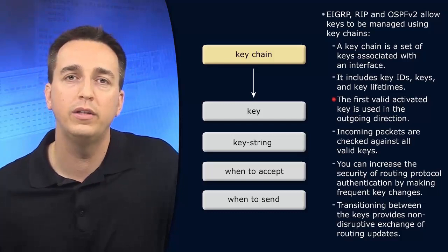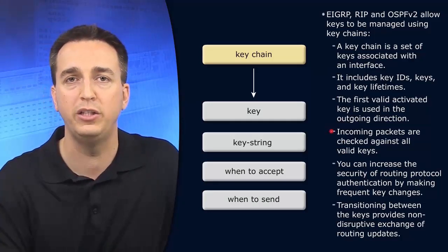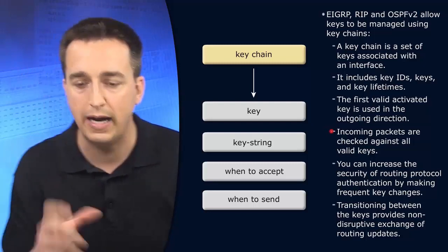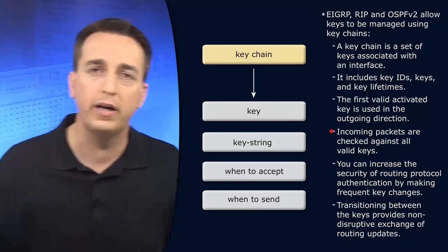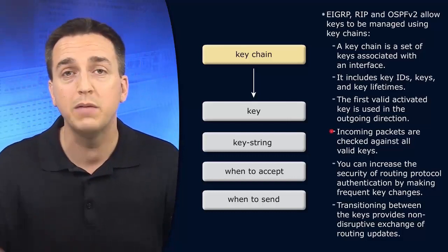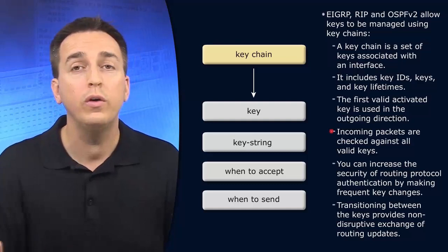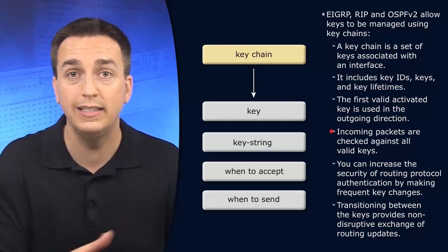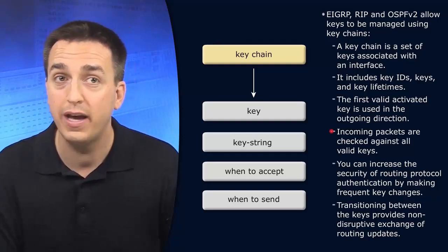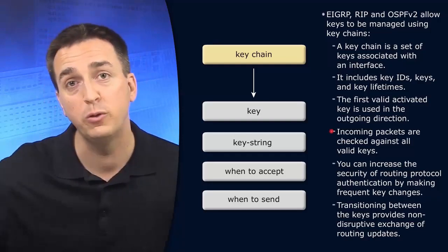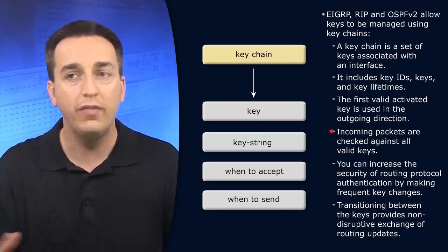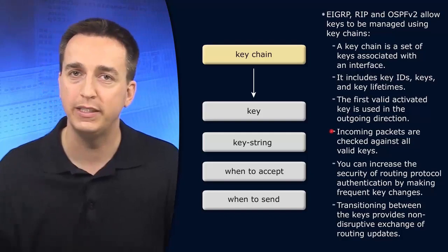On the other side, with incoming packets, the incoming packets are going to be checked against all valid keys. The router receives the packet and goes through its keys to find what's valid. The only way it's going to come up with a hash that matches is if it is also using the information in key 4, because the key ID and the key string both have to match — both are utilized during the process of creating the hash that's sent.